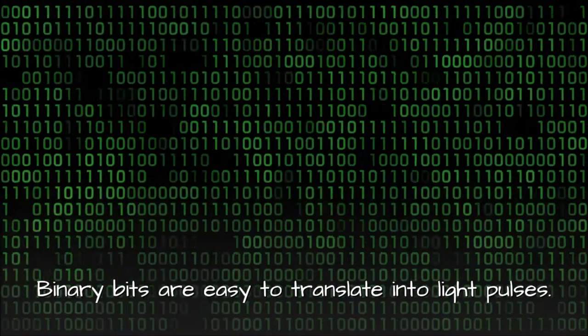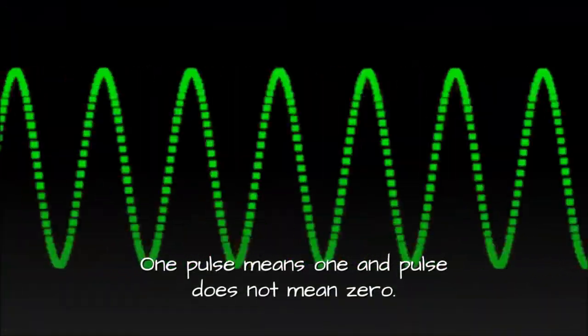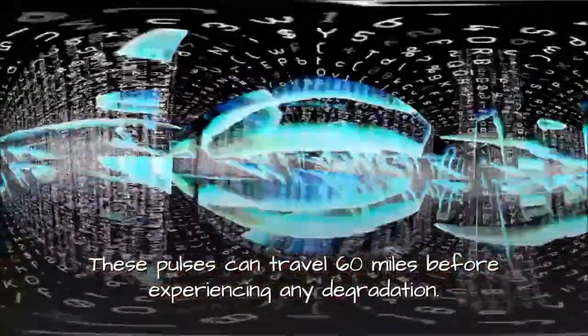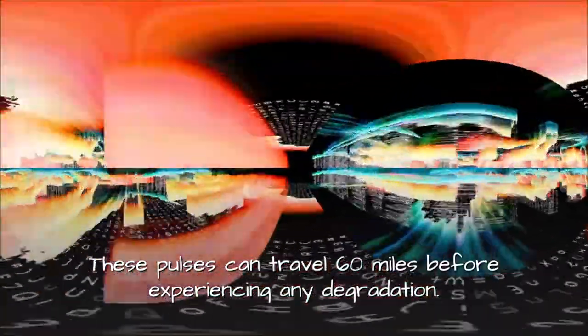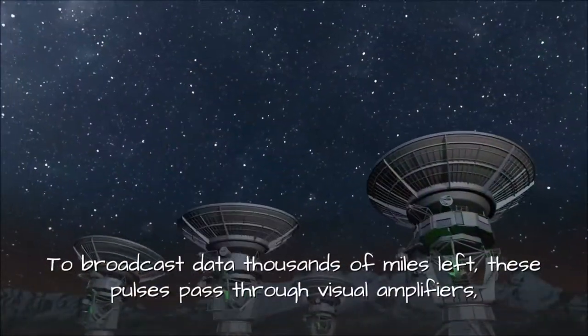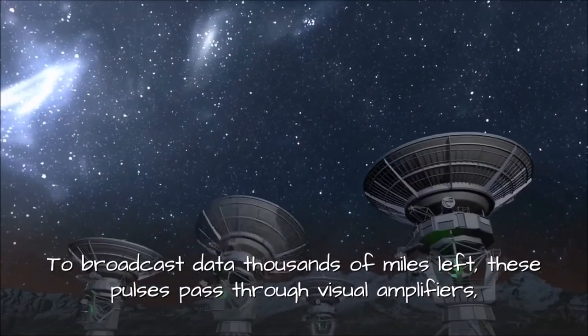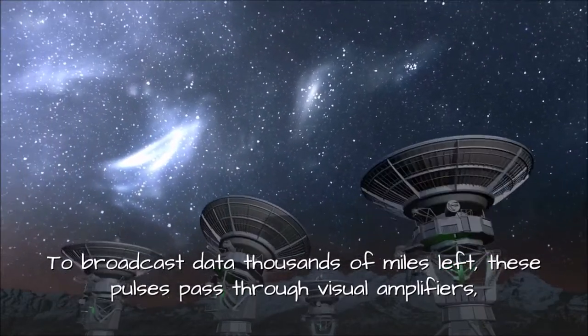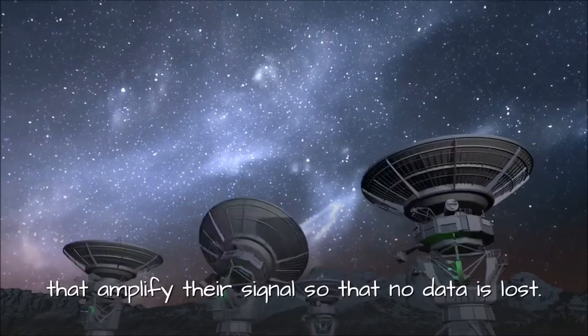Binary bits are easy to translate into light pulses. One pulse means one, and no pulse means zero. These pulses can travel 60 miles before experiencing any degradation. To transmit data thousands of miles, these pulses pass through optical amplifiers that amplify their signal so no data is lost.